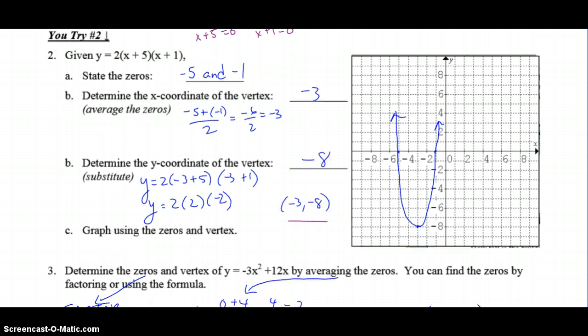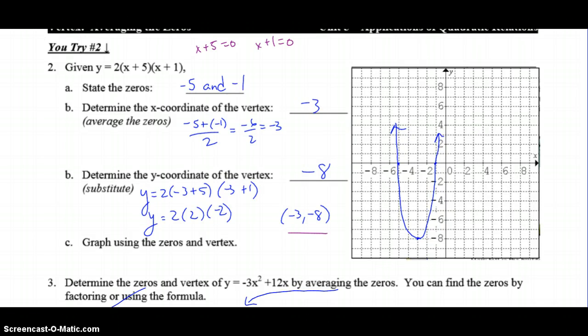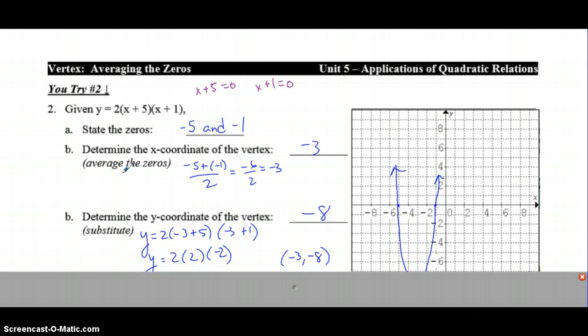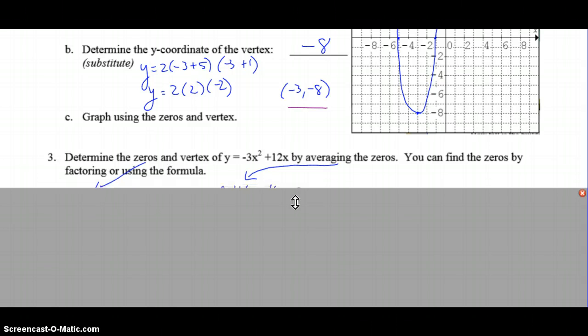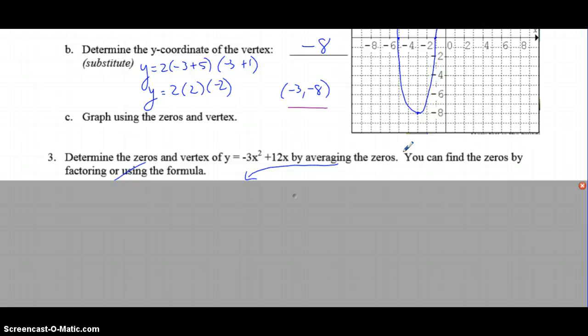For number 3, I don't want to show you my answers quite yet. For question number 3, it's asking you to determine the zeros and vertex of this equation by averaging the zeros. To get the vertex, I want you to average the zeros—I'm asking you to use that method, not completing the square. In order to average the zeros, you need to know what the zeros are.